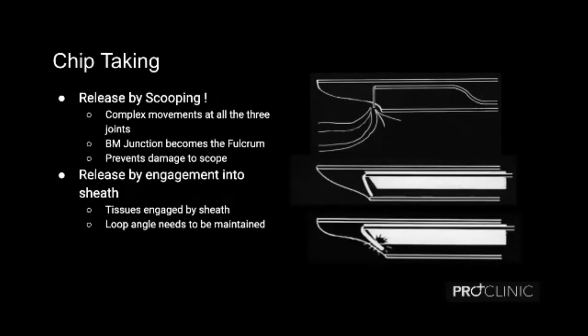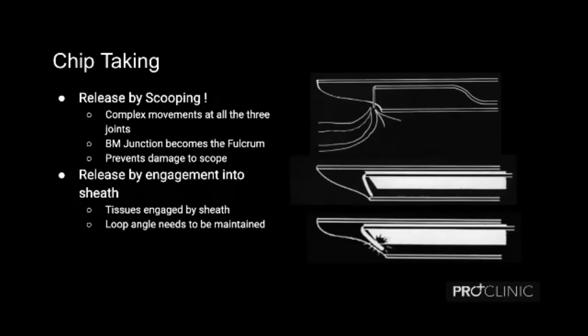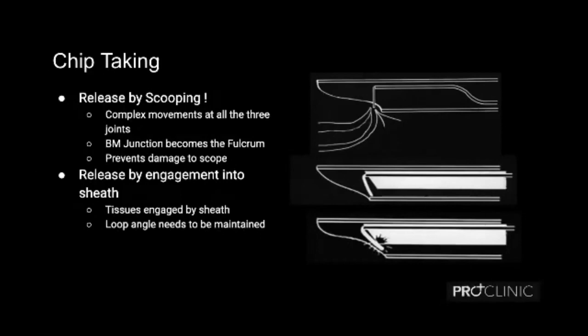There are two ways to take the chip: one is the scooping movement, where before the loop goes inside the sheet we have already completely cut the chip; the other is by engagement into the sheet, where we do not elevate the scope but exploit the mechanics of the instrument itself — when the loop goes inside the sheet it automatically cuts the chip by approximation. Scooping is a better way because it avoids any injury to the cystoscope, and I would want residents to try and use this method for chip taking.